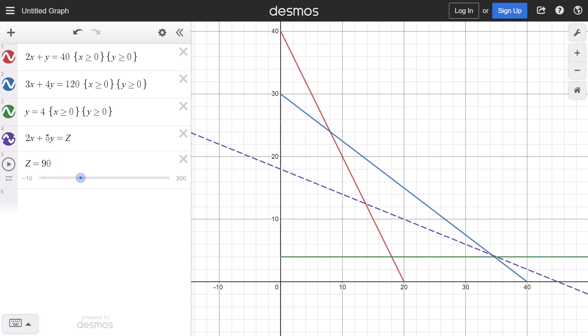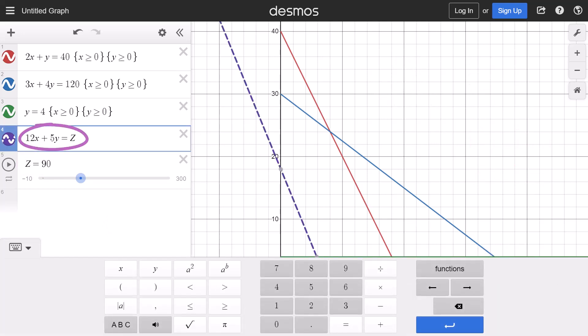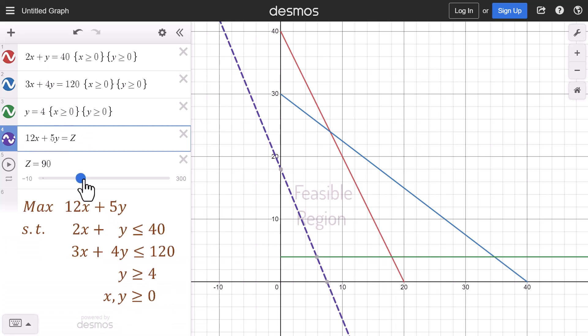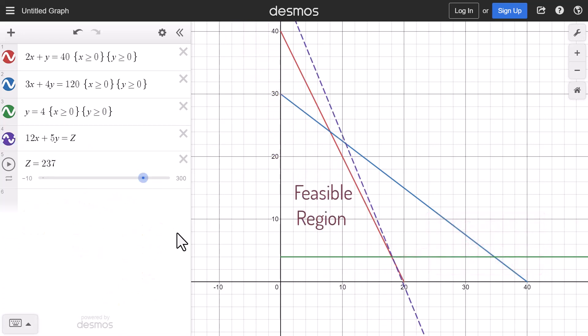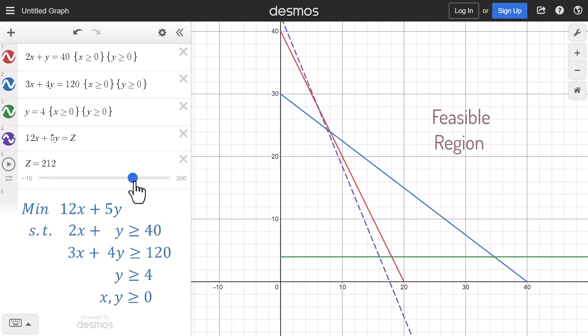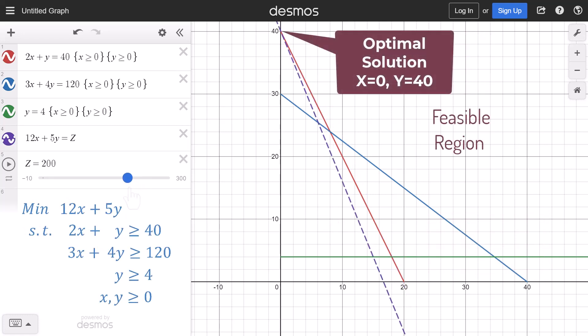Finally, suppose the objective function is 12x plus 5y, then the optimal solution for our initial maximization problem will occur at 418 here. And for the minimization problem, the optimal solution will occur at 0.40 here.